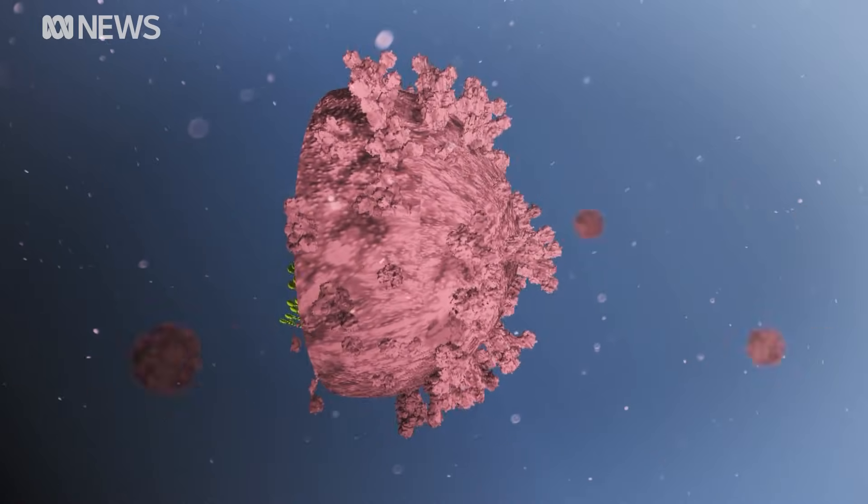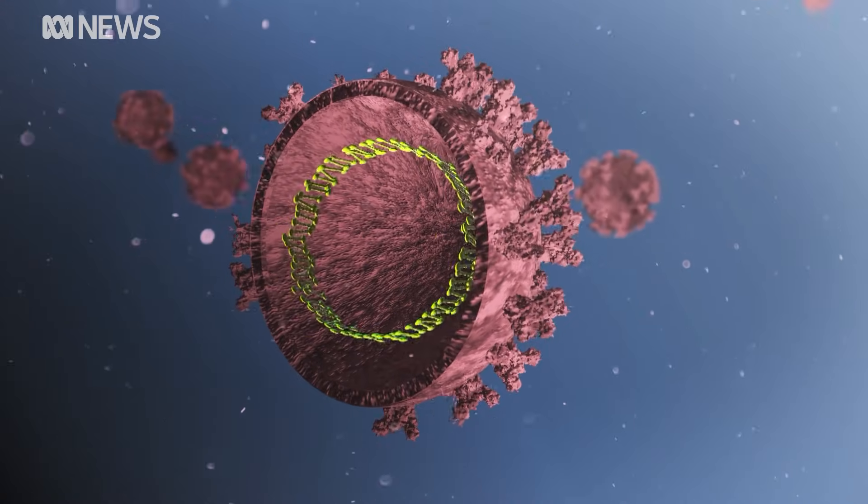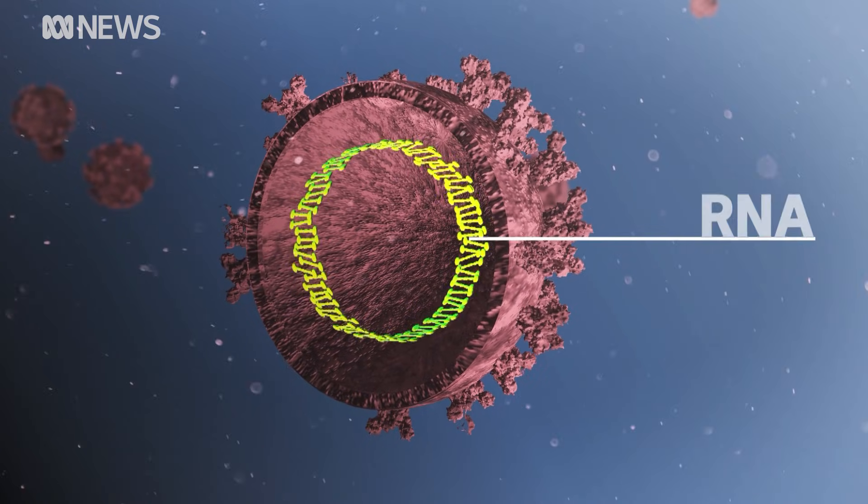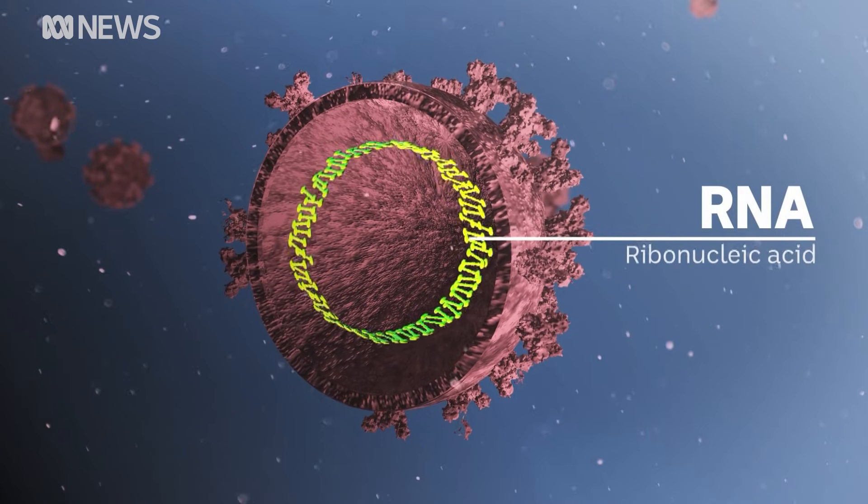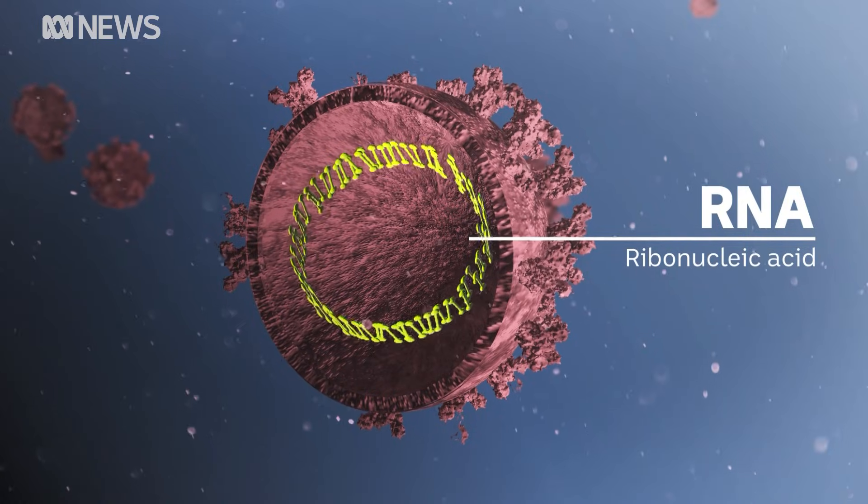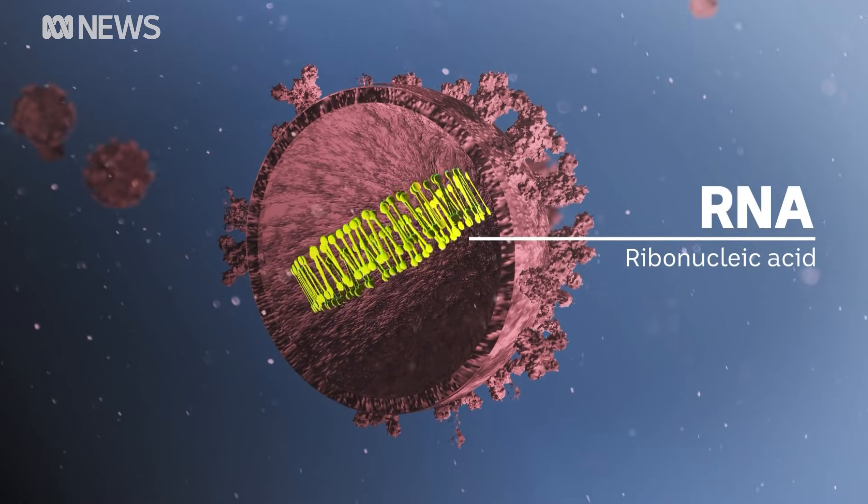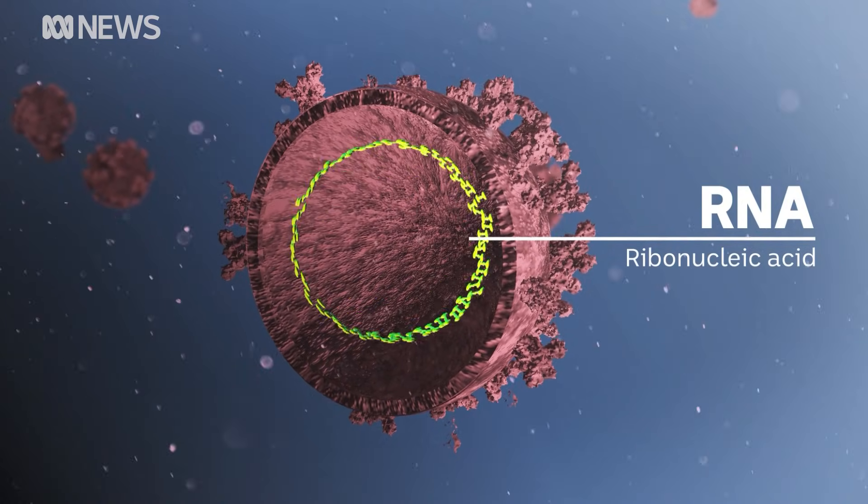Under that oily skin is where the real trouble lies. Inside each cell is a small sample of RNA, ribonucleic acid. It carries the virus's genetic code and allows it to multiply, leading to infection.